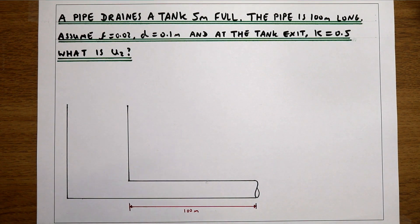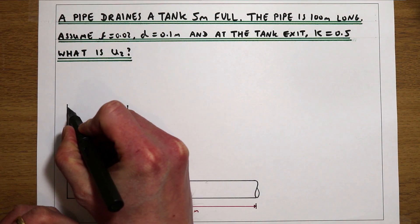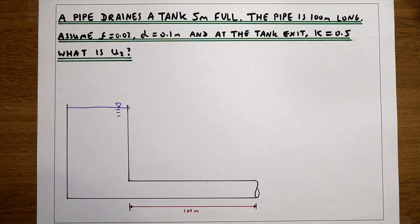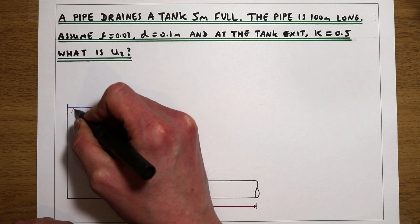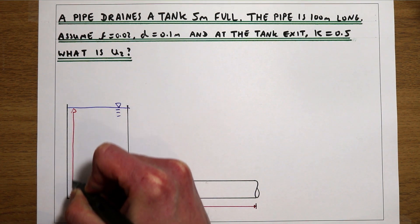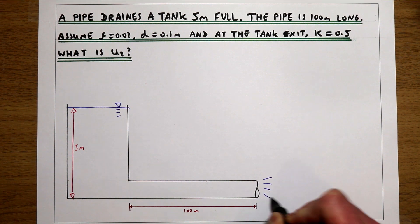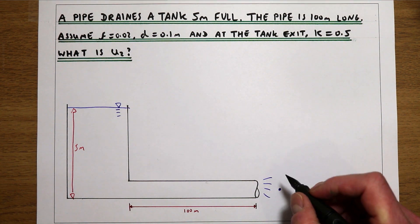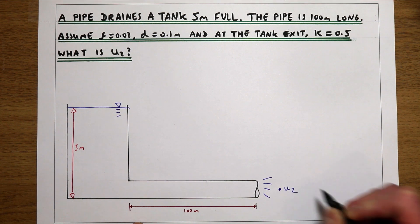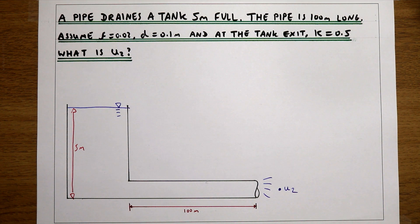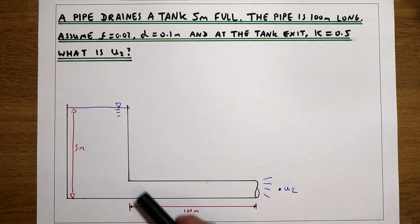In this example we've got a pipe coming out of a tank of water, filled to a depth of five meters. That five meters of water is going to be driving water through the pipe, and what we're trying to find is the velocity of the water coming out of the pipe, U2. In this example we're going to be accounting for friction in the pipe and also for loss of energy as the water exits the tank into the pipe.